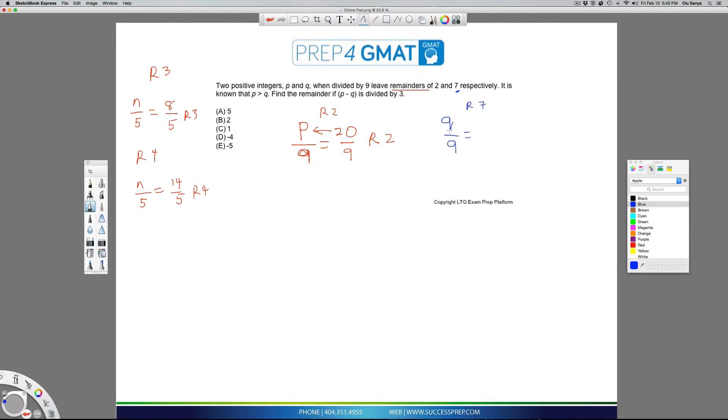But because I need it to have a remainder of seven, nine goes into nine, I'm going to then add seven to it. So that means this number here can be 16, because nine plus seven is 16. And I know when I divide that, I will get a remainder of seven. So at this point, we've established what our Q is and what our P is.